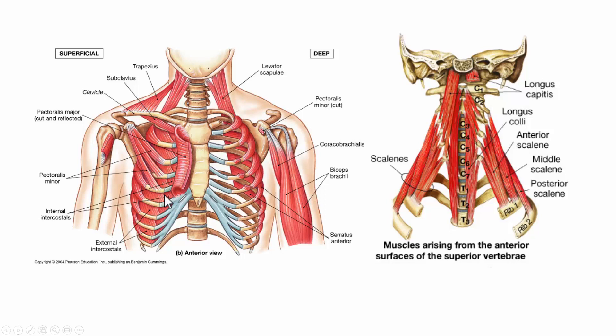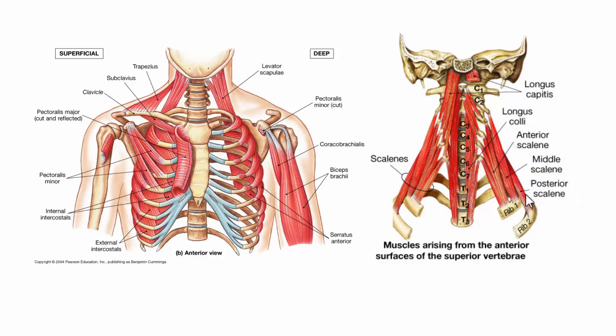We also have accessory muscles, such as the scalenes — anterior, middle, and posterior. These are usually only used when someone is in respiratory distress, for instance a long-term COPD patient with advanced emphysema. You'll sometimes see them leaning against a table, using their neck muscles to pull up on the ribs and increase thoracic volume just enough to draw in a little more air. They don't bring in a lot, but sometimes a little bit helps.